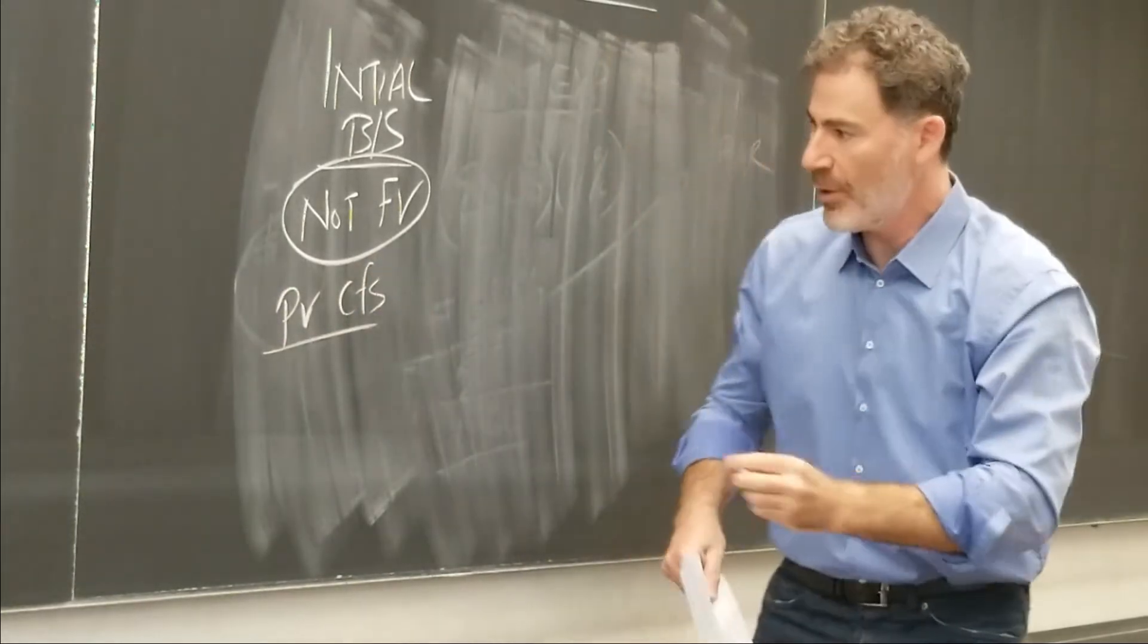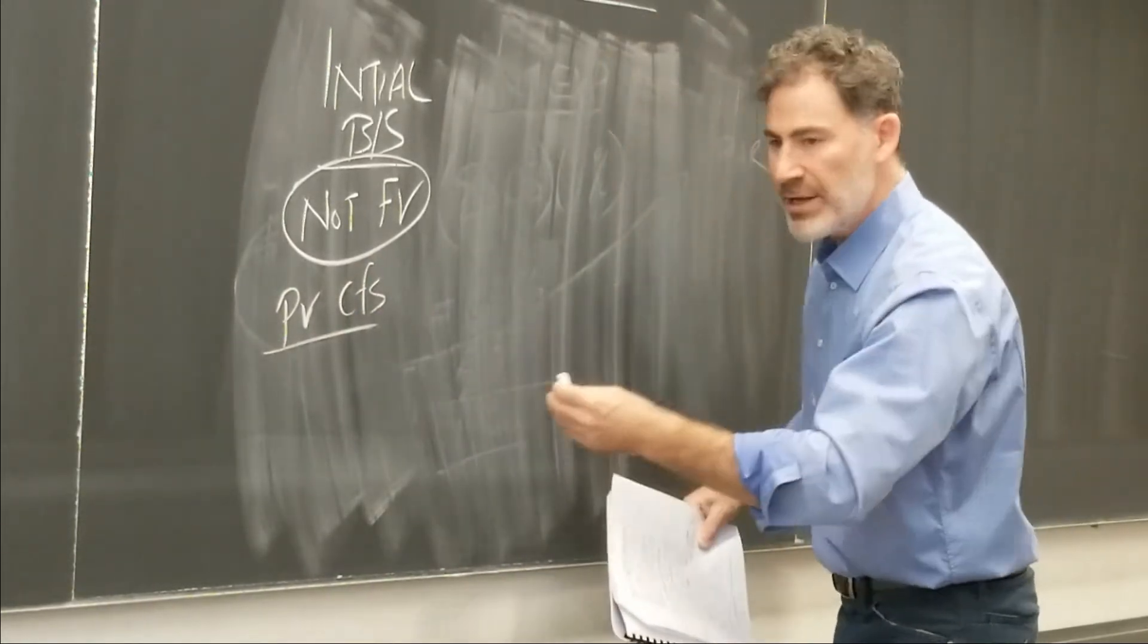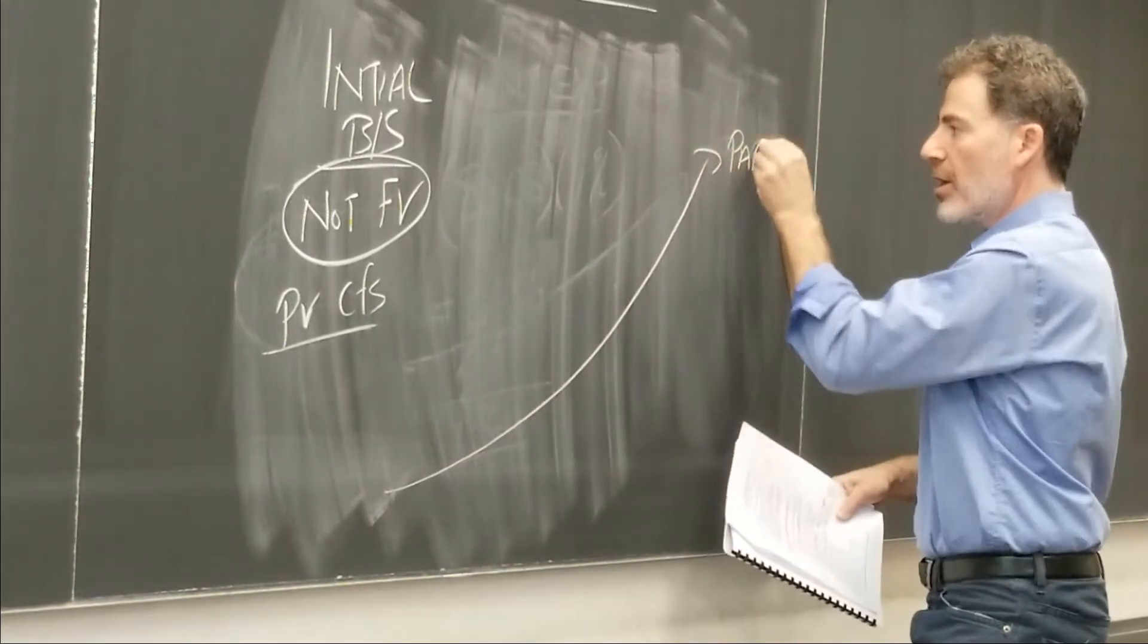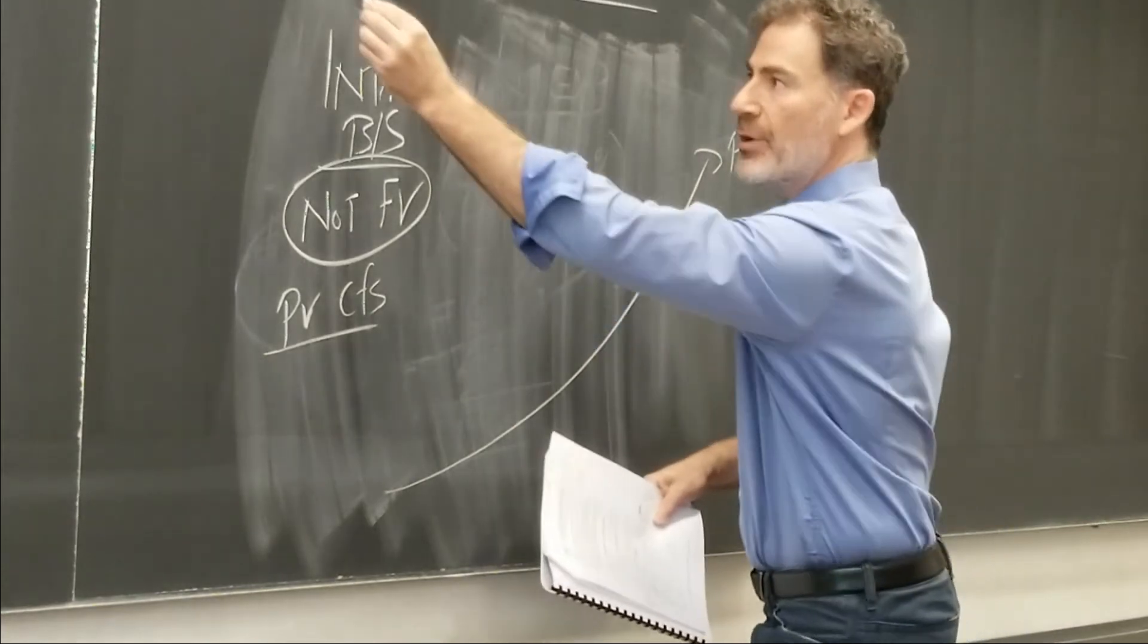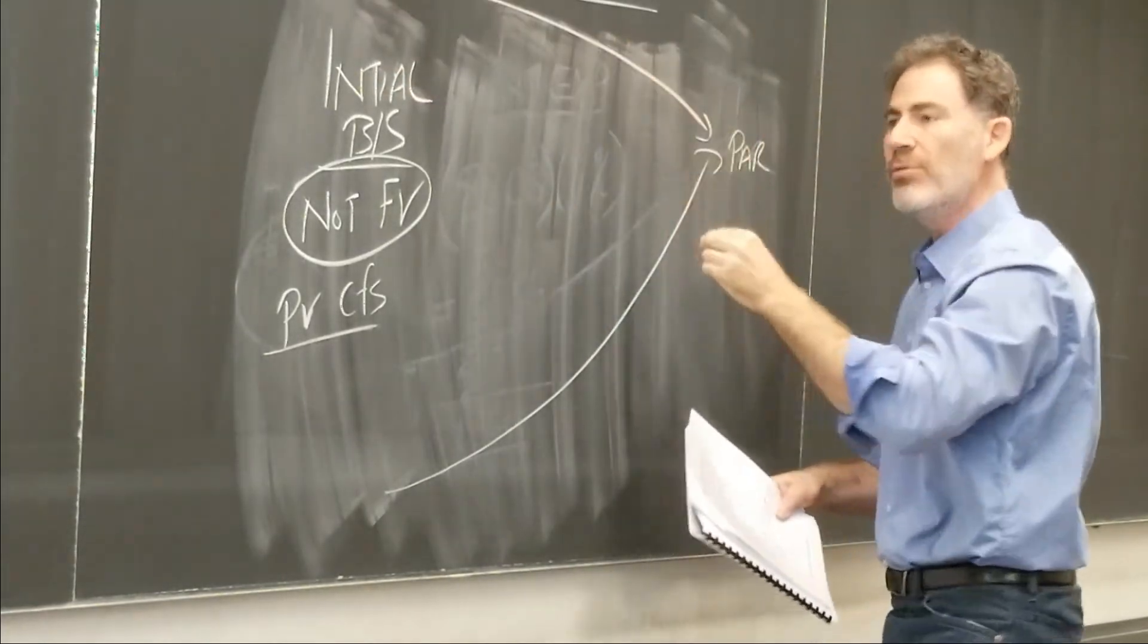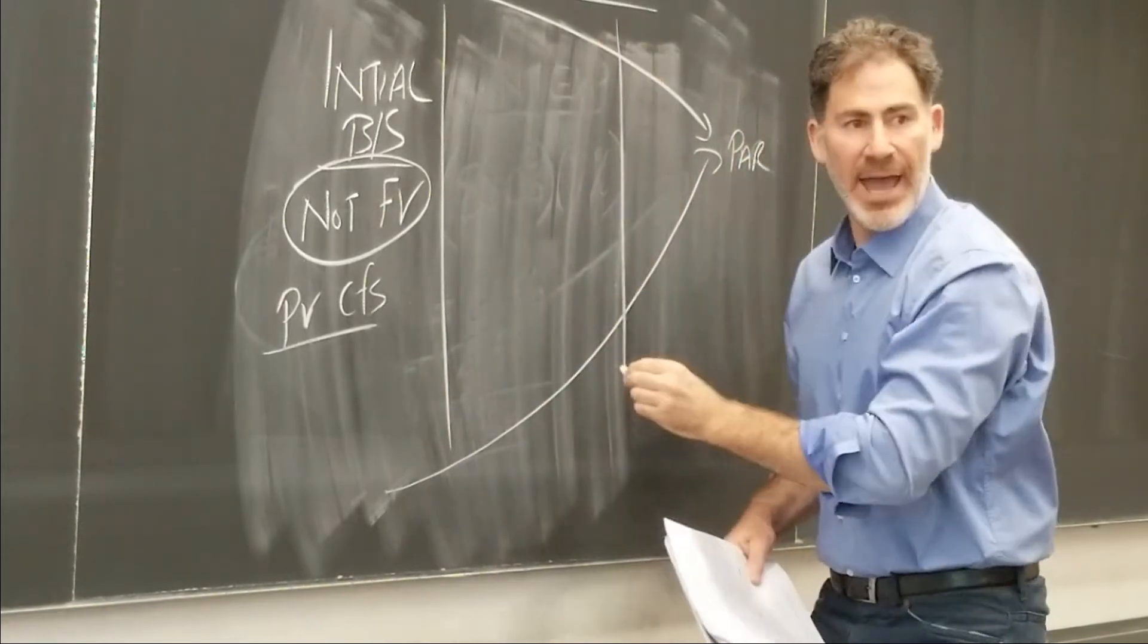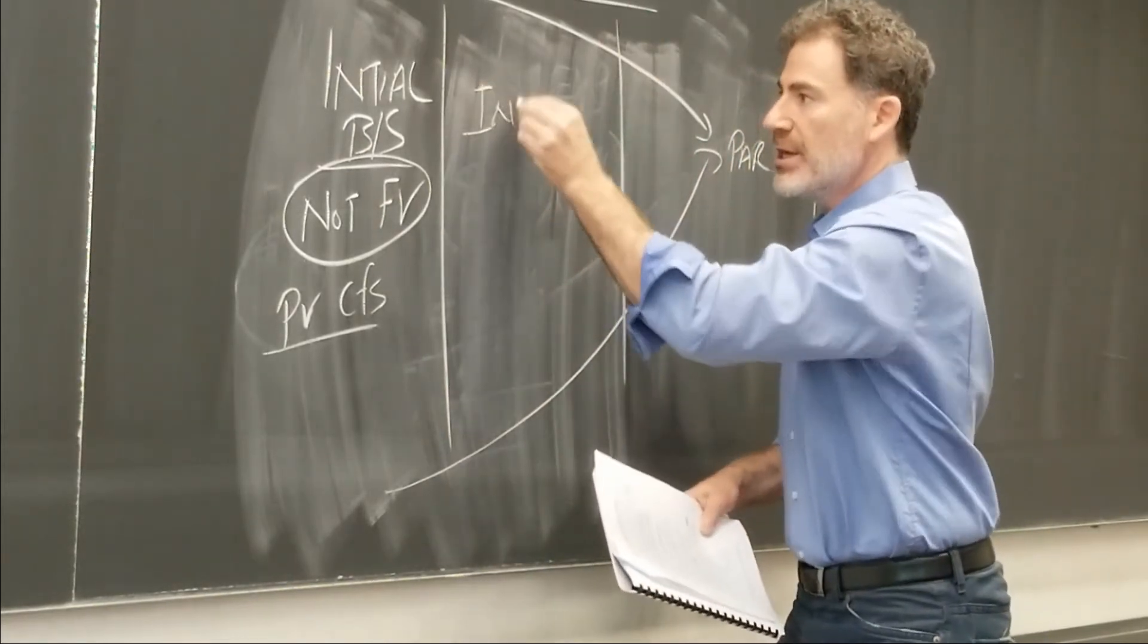So we're going to work through an example. And then, this bond, if it's issued at a discount, it will amortize its way to par. Or, if it's issued at a premium, it will amortize its way down to par. And throughout the year, we will be able to calculate the interest expense.